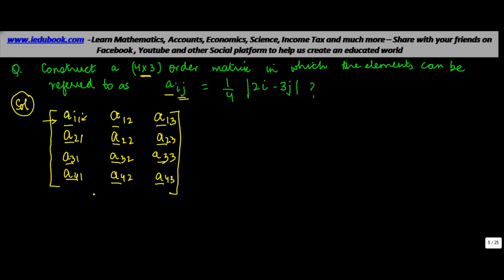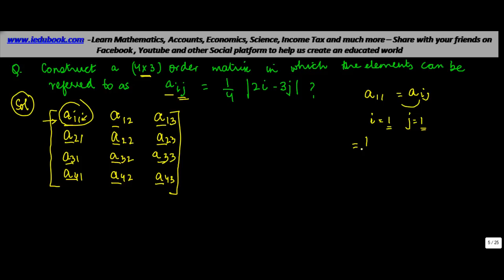Now how do you calculate the value of all these elements? You are given a_ij = (1/4)|2i - 3j|. For a₁₁, i = 1 and j = 1. Substituting into the formula: (1/4)|2×1 - 3×1| = (1/4)|2 - 3|.